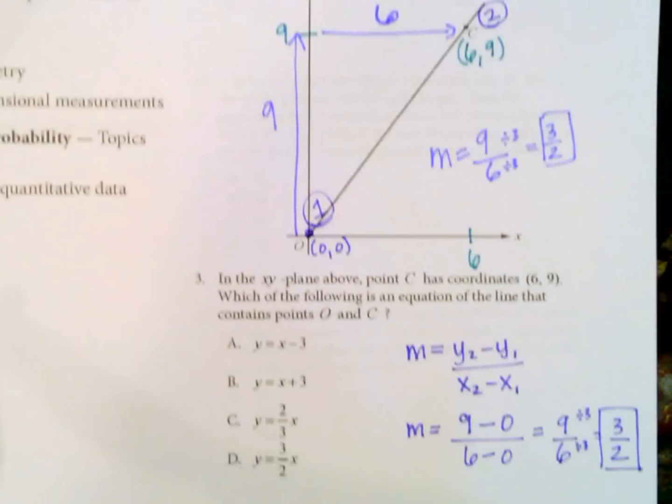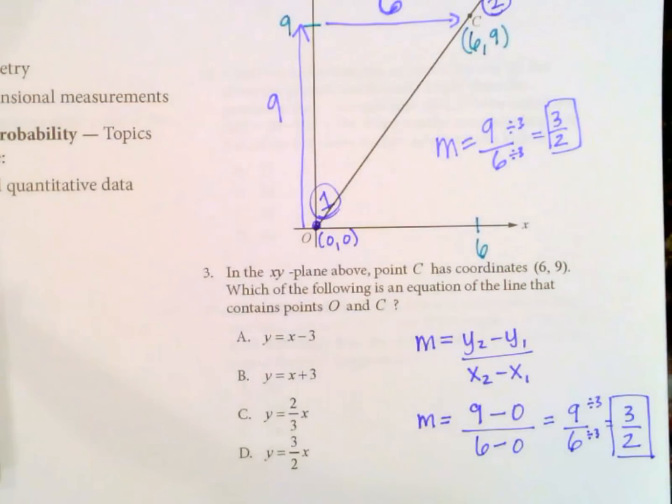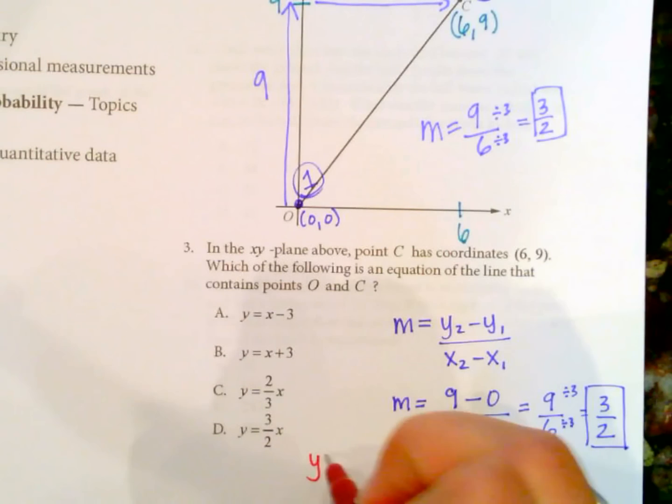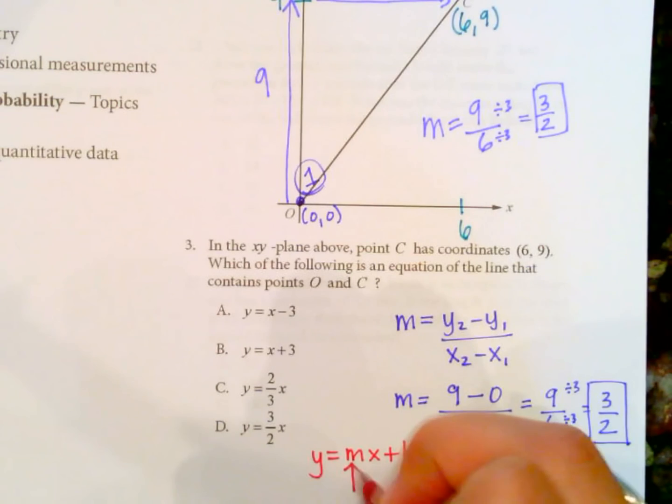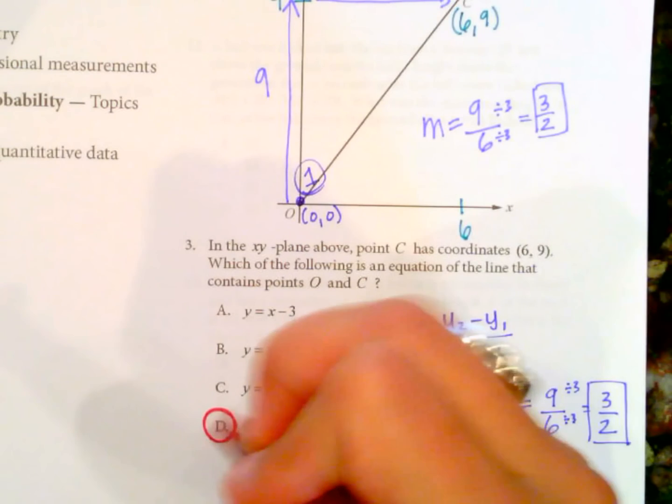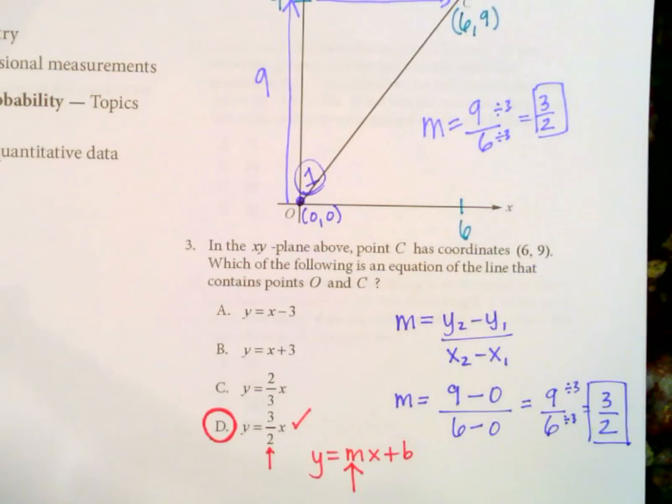So now what we need to do is look for the line that contains this slope. So slope, reminder here too, this is in the format y equals mx plus b. This is slope intercept. So we're looking for the equation that has m in this position. It has 3 over 2. That's going to be our answer D. We have 3 over 2 right here. So that's going to be our correct answer.